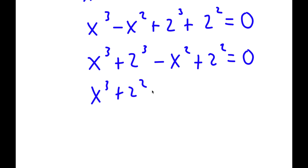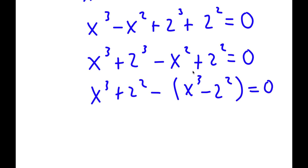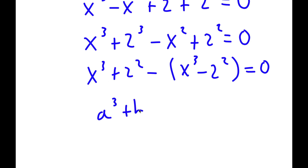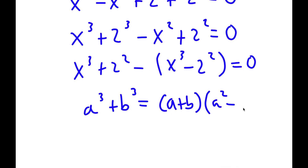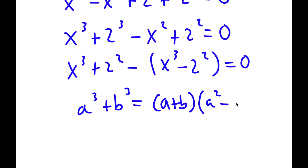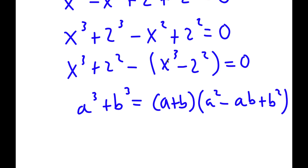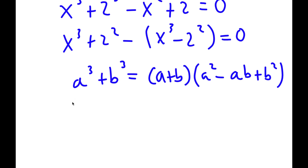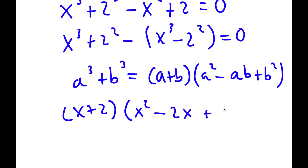From here, if I factor out negative 1, I get negative times x to the power of 2 minus 2 to the power of 2, is equal to 0. Now if I have something in the form a to the power of 3 plus b to the power of 3, this is equal to a plus b times a squared minus ab plus b squared. So this gives x plus 2 times x squared minus 2x plus 4.